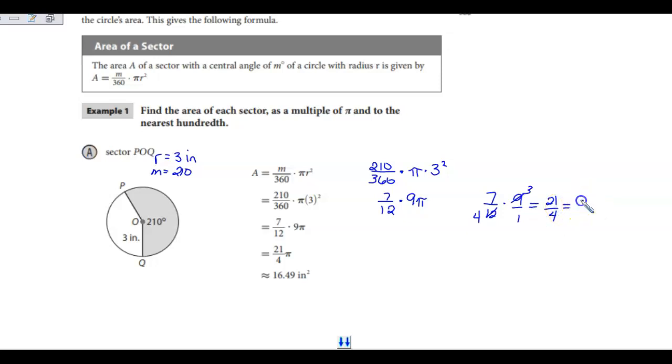21 over 4 is also the same as 5.25. So 5.25 pi is in terms of pi. I could also write it as 21 fourths pi. When I take that and multiply it, I get 16.49 rounded to nearest hundredth, and it is area, so it's squared.